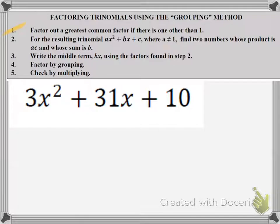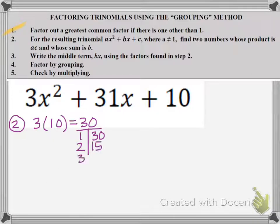Now let's look at step 2. I have to find two numbers whose product is AC and whose sum is B. So for step 2, I'm going to multiply A times C and obtain 30, and then I need a list of the factors of 30.